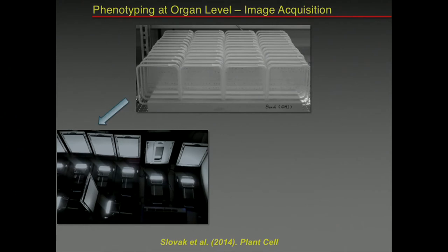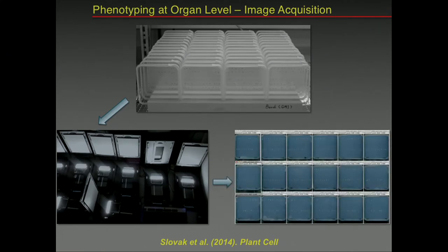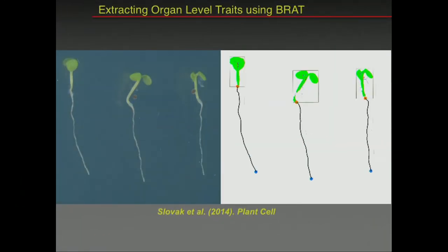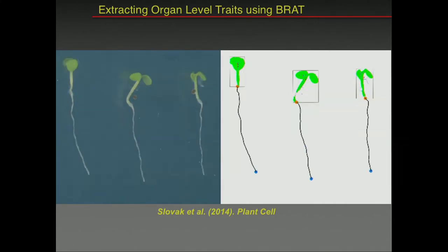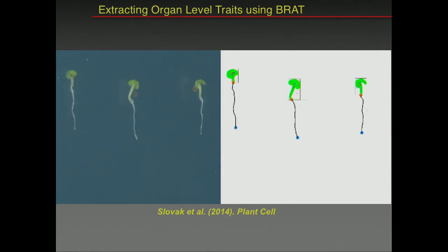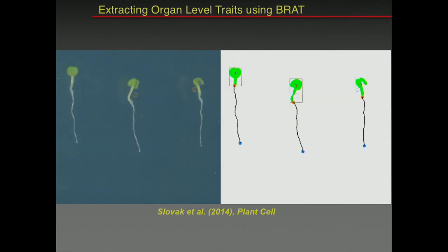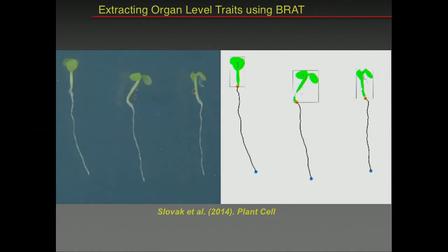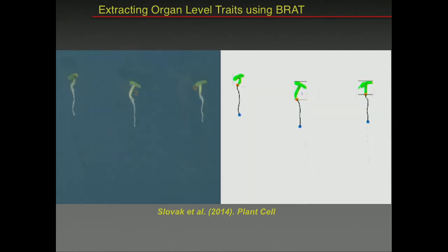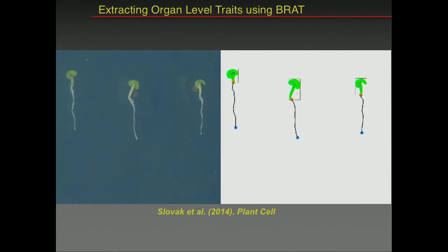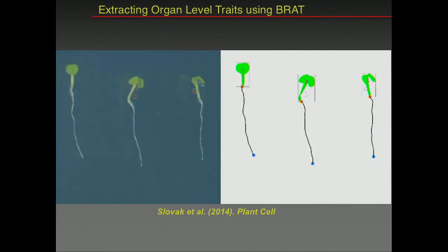We ended up with all these images and I developed an algorithm that takes these images and converts them into data. The computer program detects what is a plant, what part of the image is a root, and can measure roots very accurately. Because it's a computer program, it's very fast — we can measure millions of roots without unhappy students.